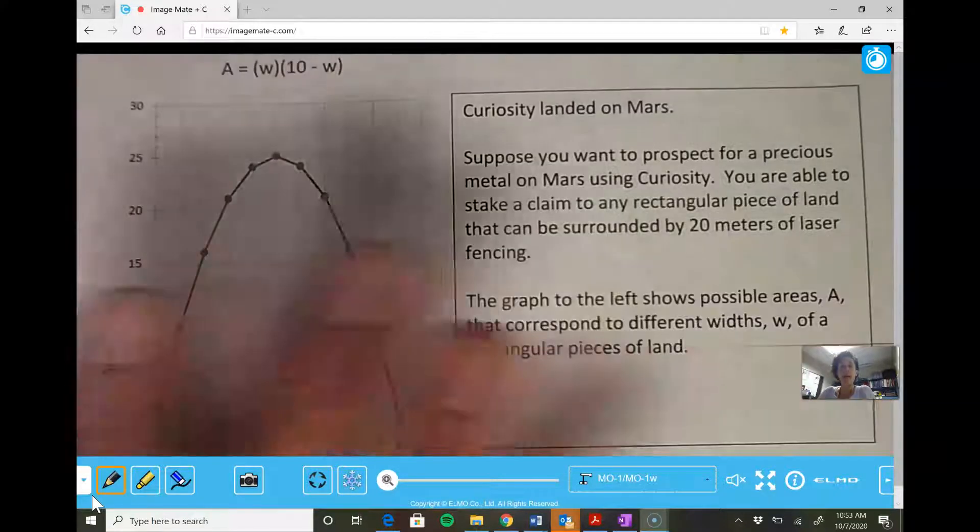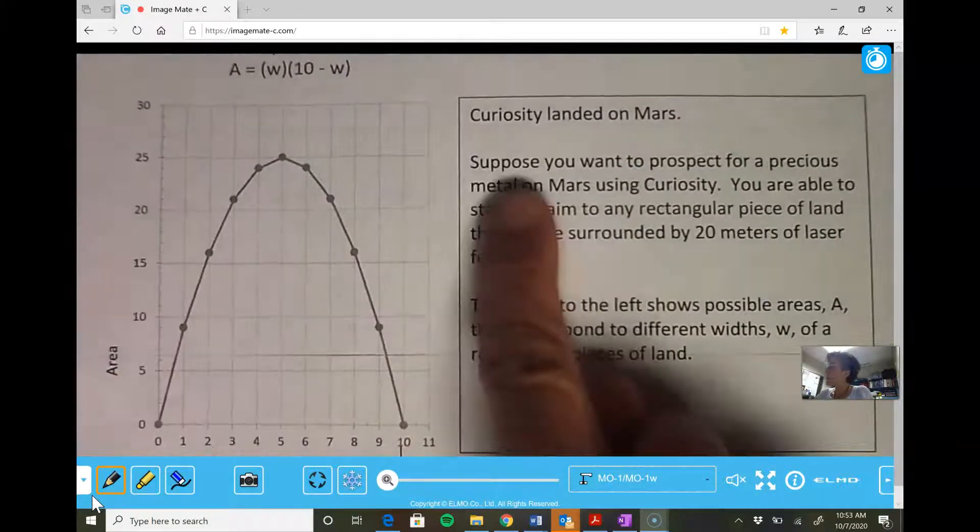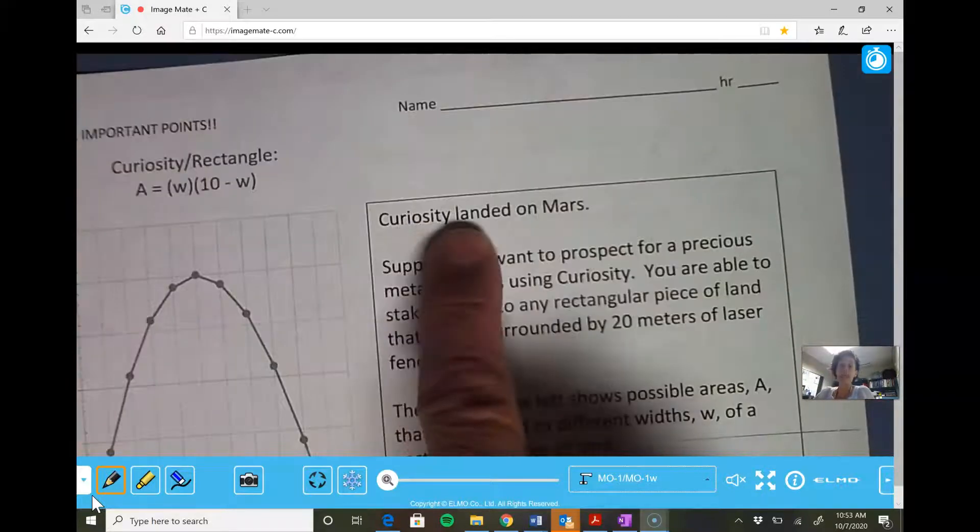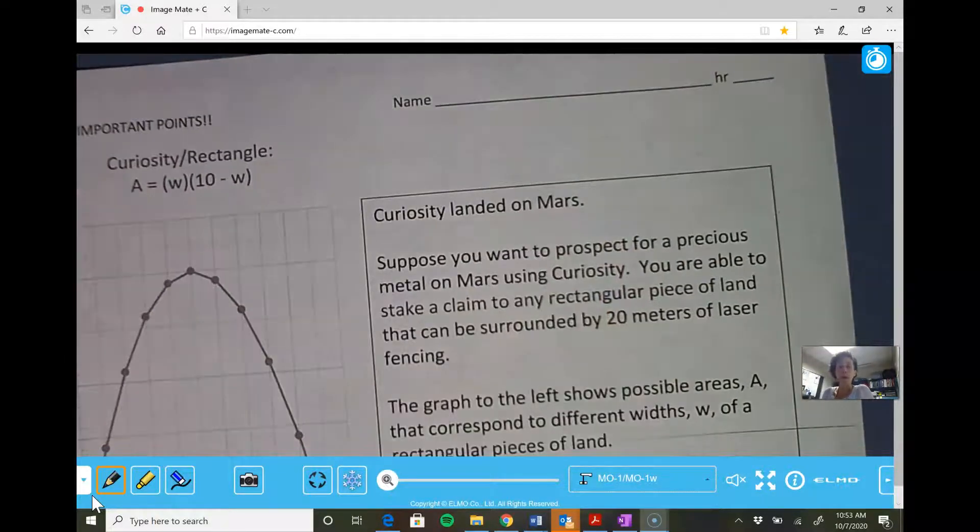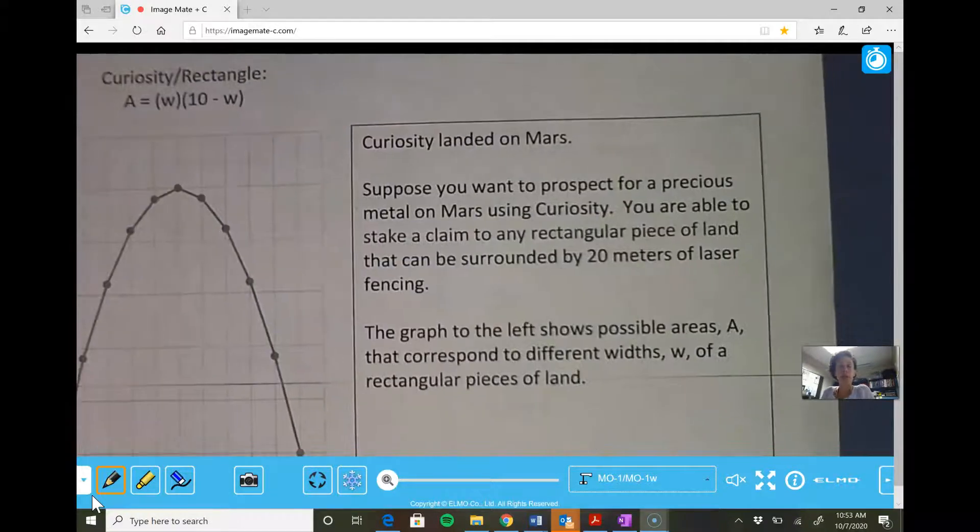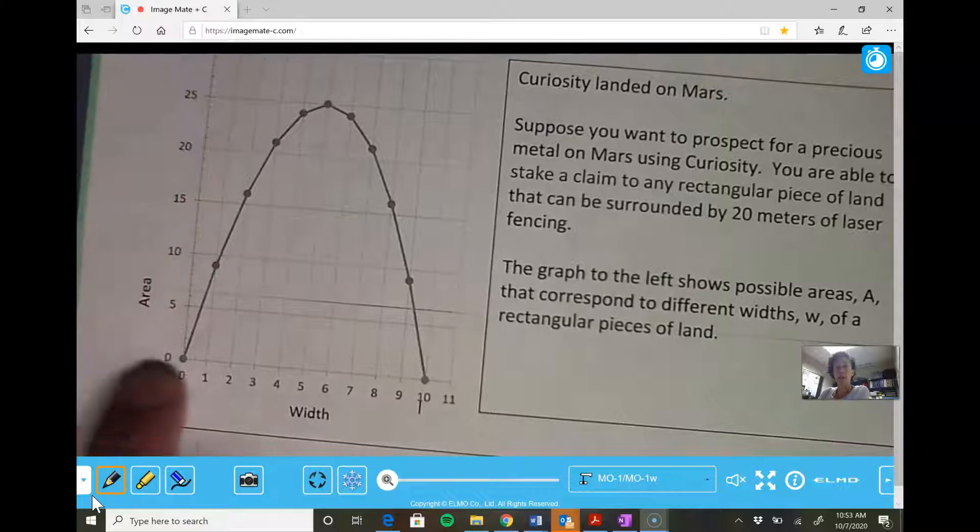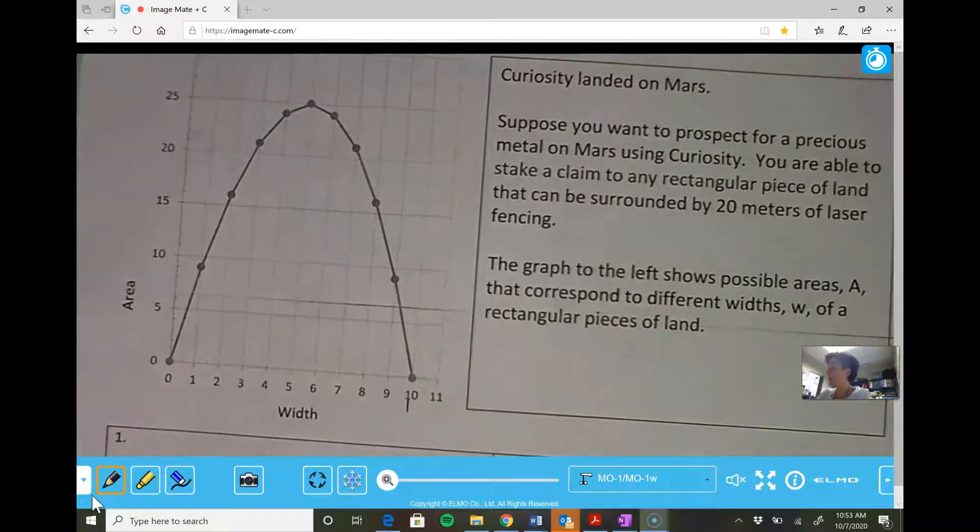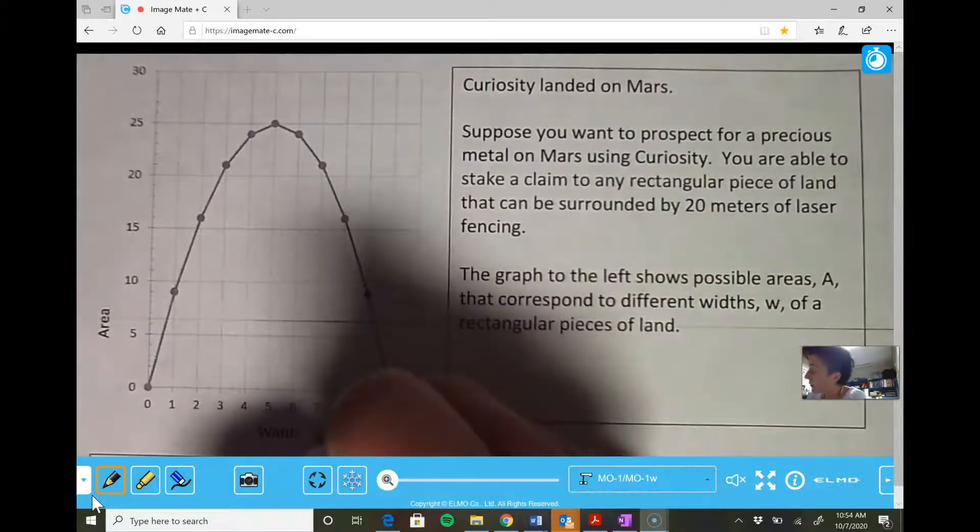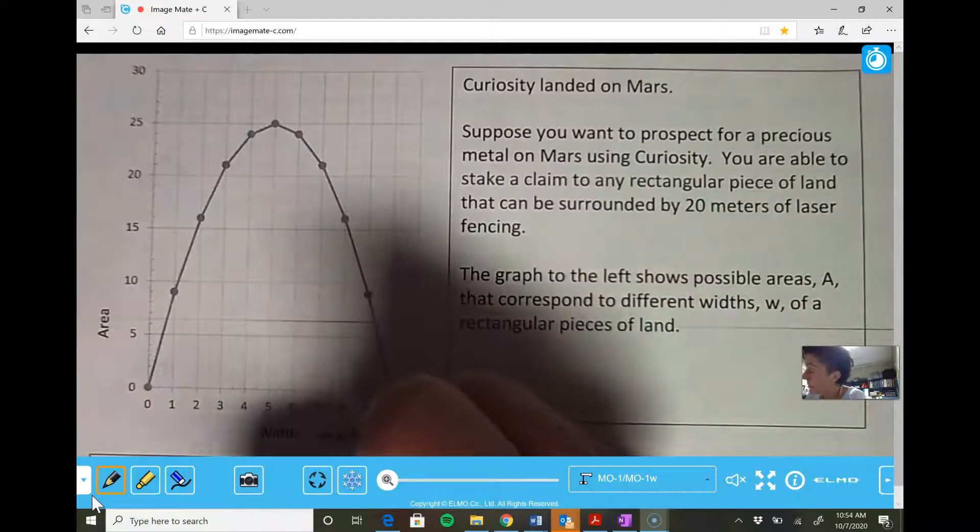But you should always read what it's about and take a look at your graph. This says Curiosity landed on Mars. Suppose you want to prospect for a precious metal on Mars using Curiosity. You're able to stake a claim to any rectangular piece of land that can be surrounded by 20 meters of laser fencing. The graph to the left shows the possible areas that correspond to the different widths of our rectangular pieces of land. And they do mention this is meters, so I'm going to write meters for my x-axis. And when you do area, you use square meters in your answer.